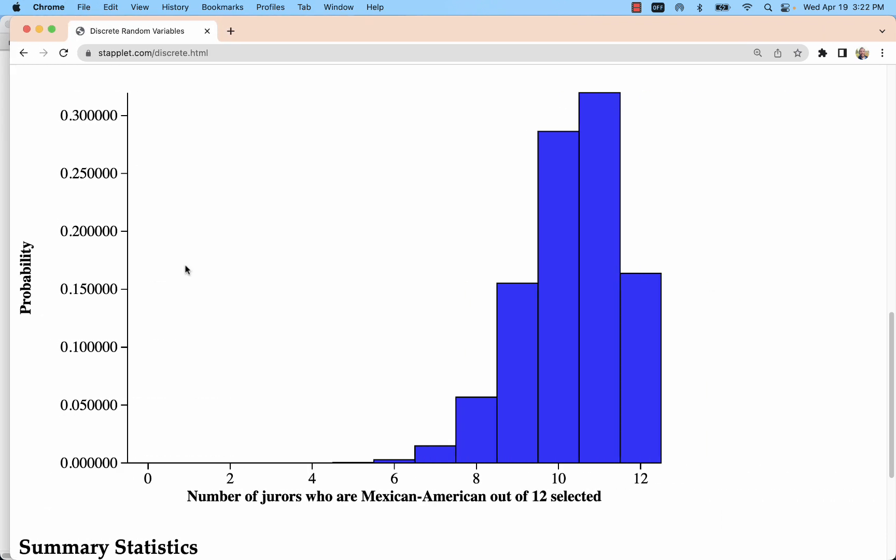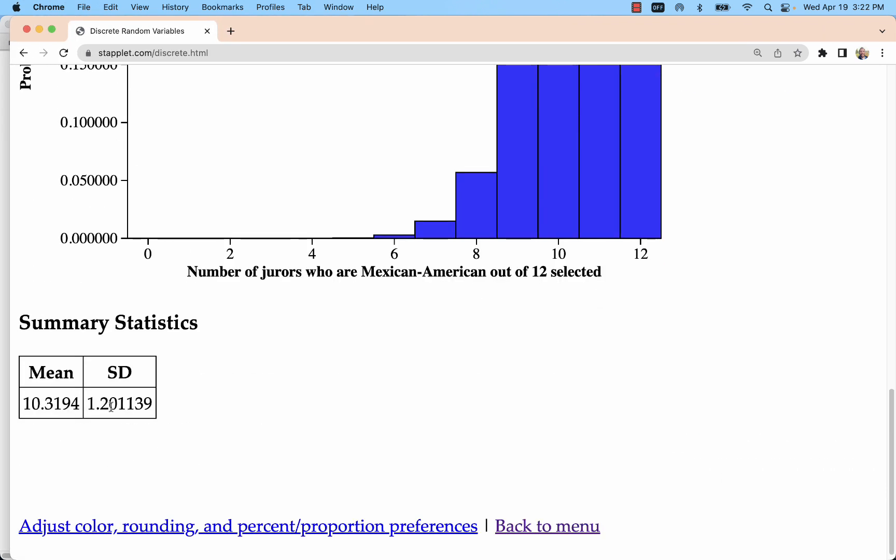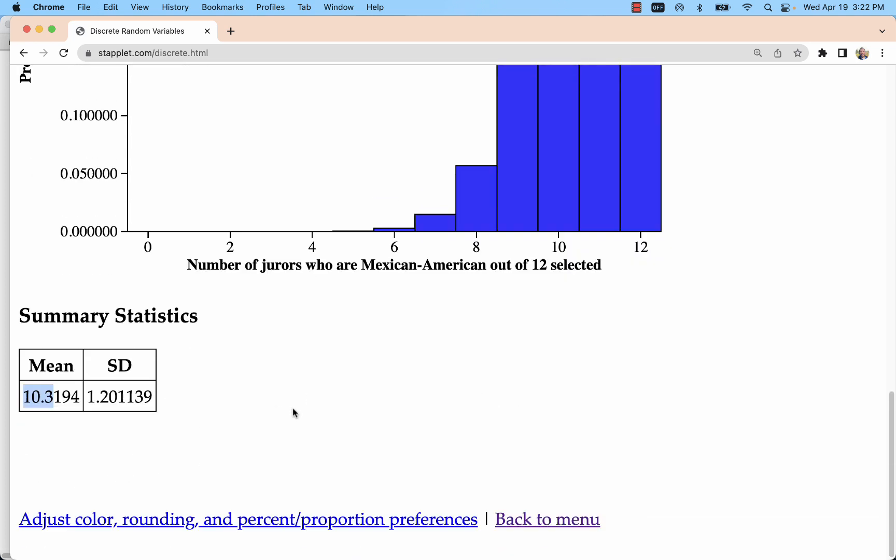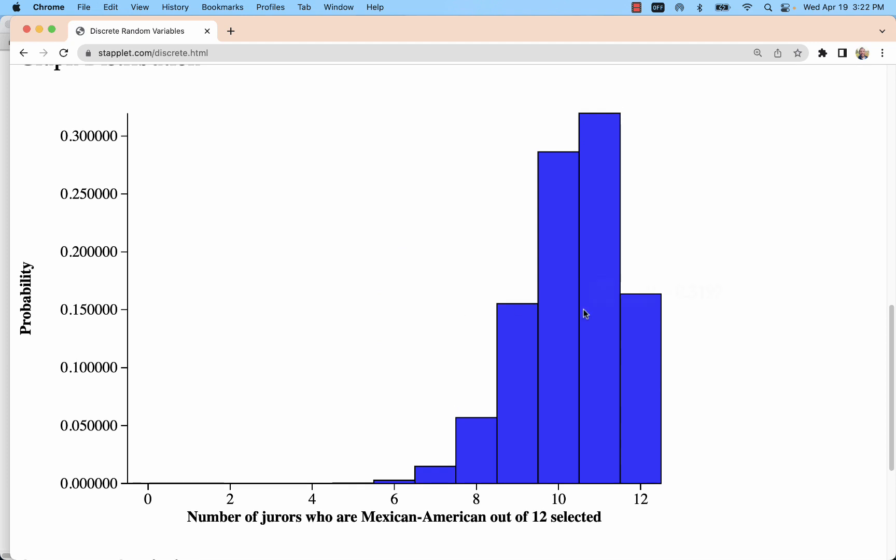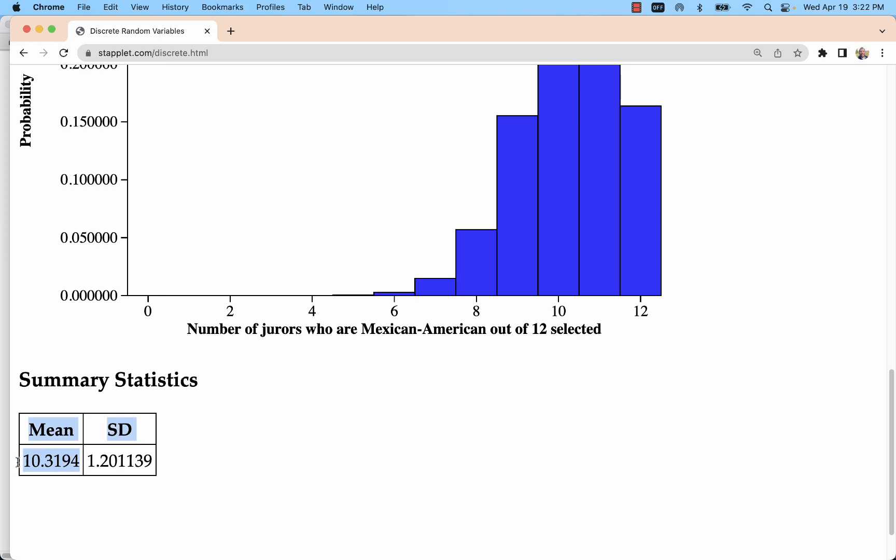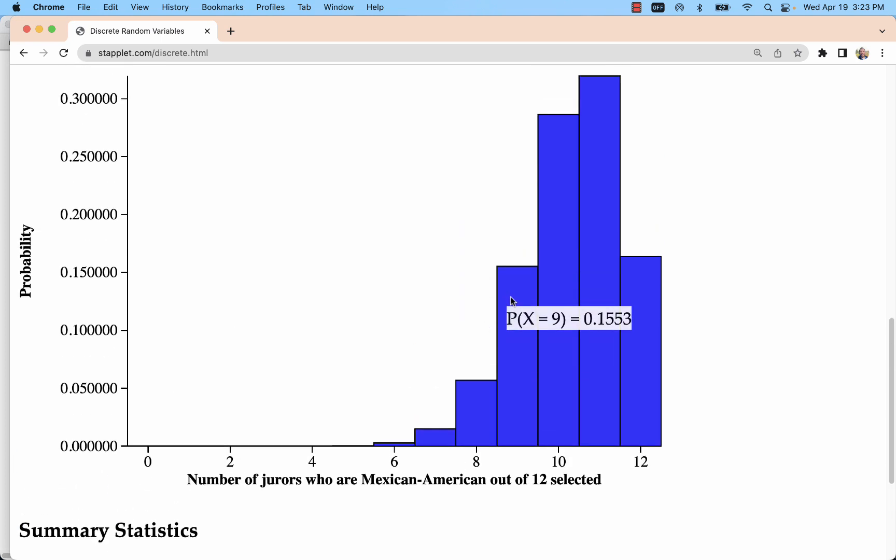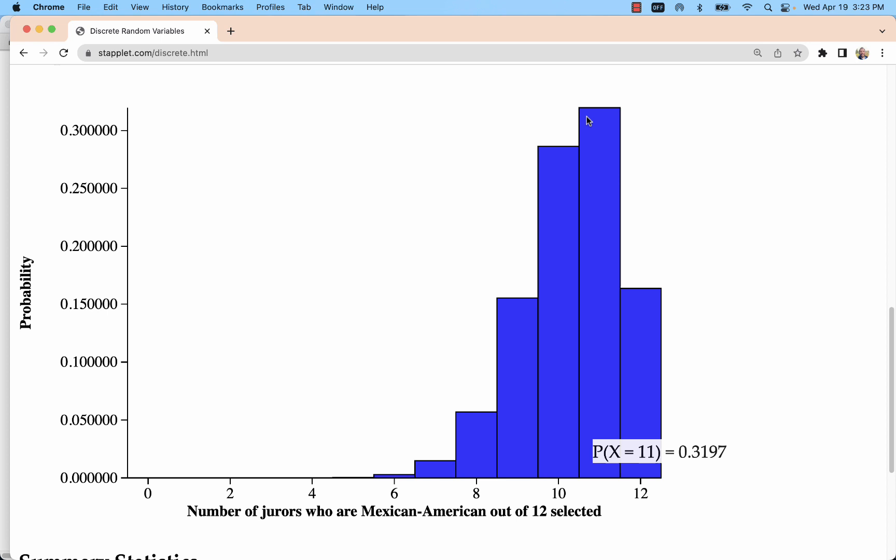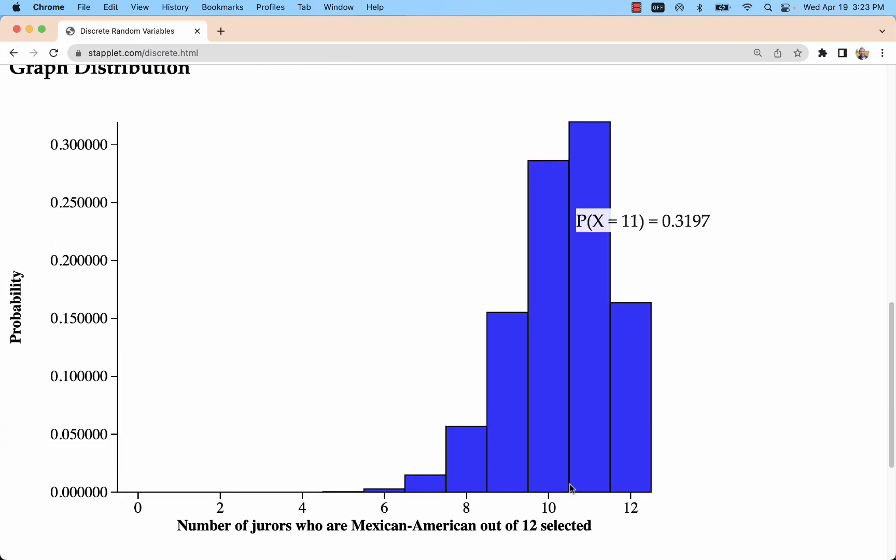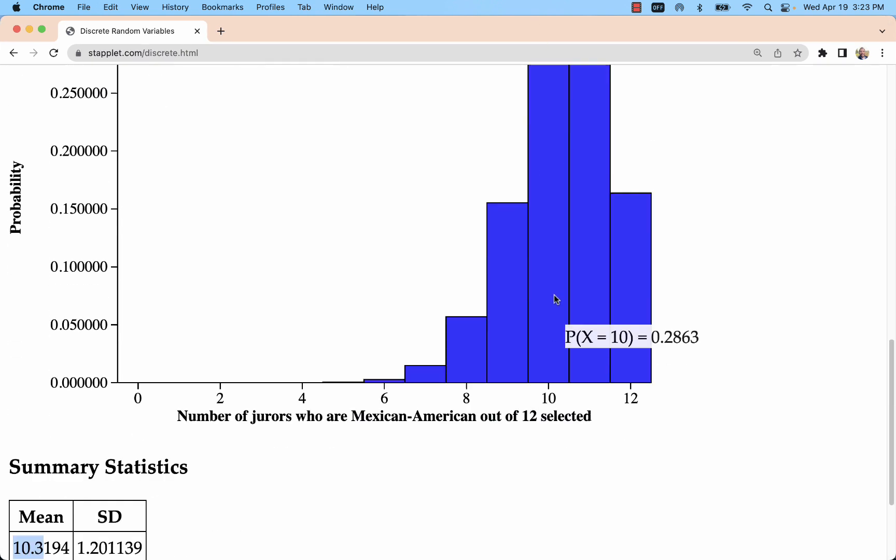But the other things that we get from staplet is the mean and standard deviation. The mean is also called the expected value. Now, we don't expect to get 10.3 jurors who are Mexican-American on this jury because it has to be a whole number. But that just gives us an idea of kind of the center of the target, kind of thinking about it in terms of like a dartboard. This is the middle of what we expect to get. And it's really on the high end of X. So because it's a high percentage, it's 86%, we really expect to be close to that value of 10 or 11.